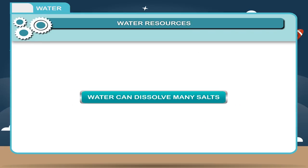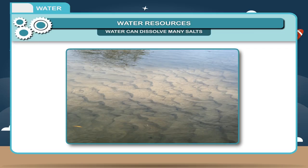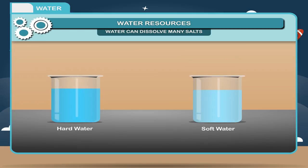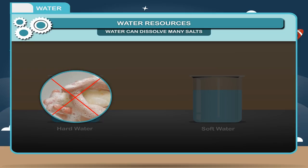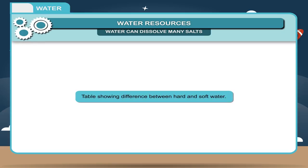Water can dissolve many salts. Water is a universal solvent and dissolves a number of salts. Salts that exist on the earth in nature are classified based on their solubility in water. Water is found in two types on the earth's surface: hard water, which does not lather easily with soap, and soft water, which lathers easily with soap.